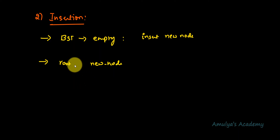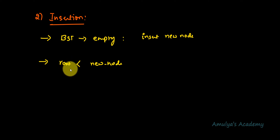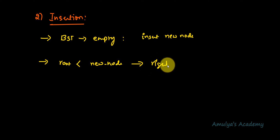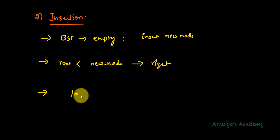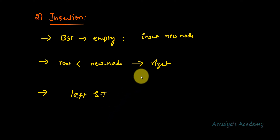If the binary search tree is not empty, we compare the key of the root node with the new node's value. For now, let's deal with distinct values only. If the new node's key is greater than the root node, we go to the right subtree to insert it. If the root node key is greater than the new node, we go to the left subtree. In both subtrees we again compare values repeatedly until we identify the correct position.